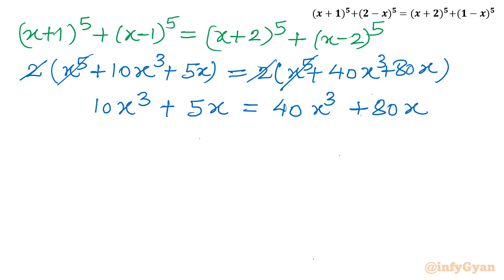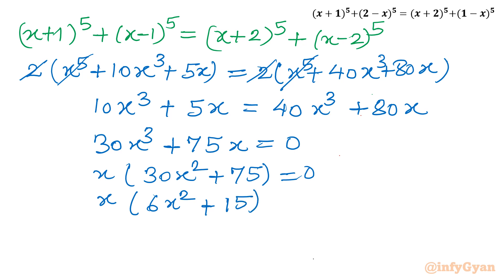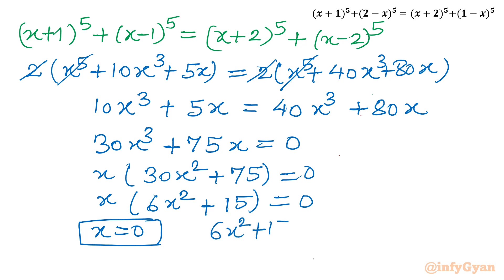Taking all terms to one side gives 30x^3 + 75x = 0. Dividing by 5 yields 6x^3 + 15x = 0, which factors as x(6x^2 + 15) = 0. So either x = 0, which is one solution, or 6x^2 + 15 = 0.